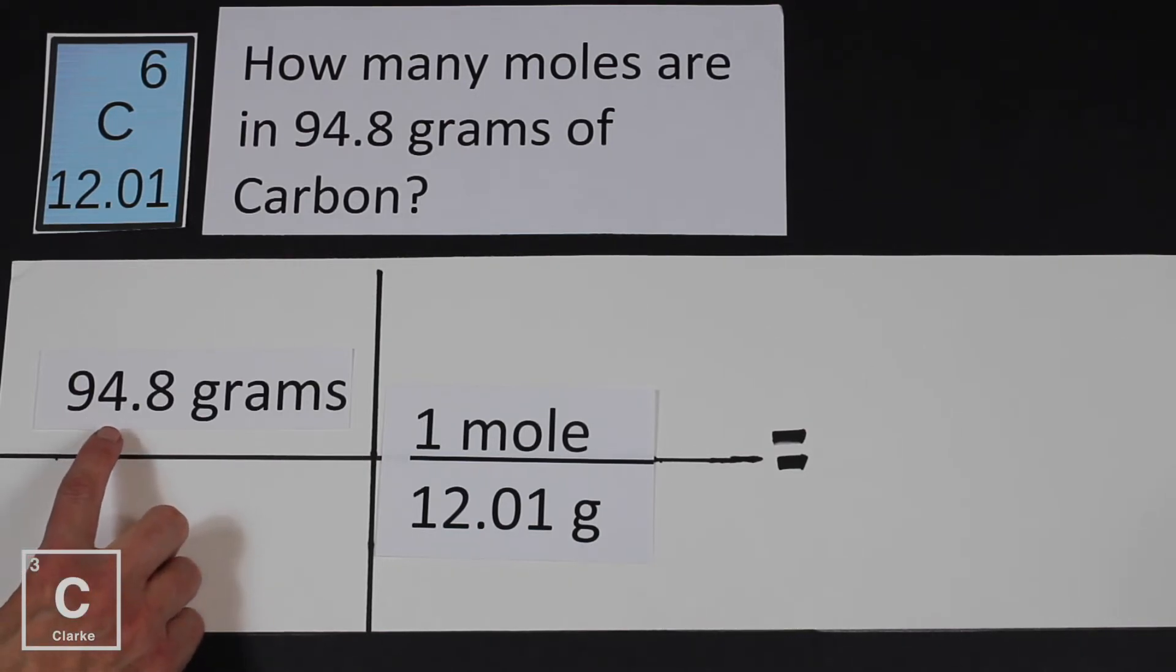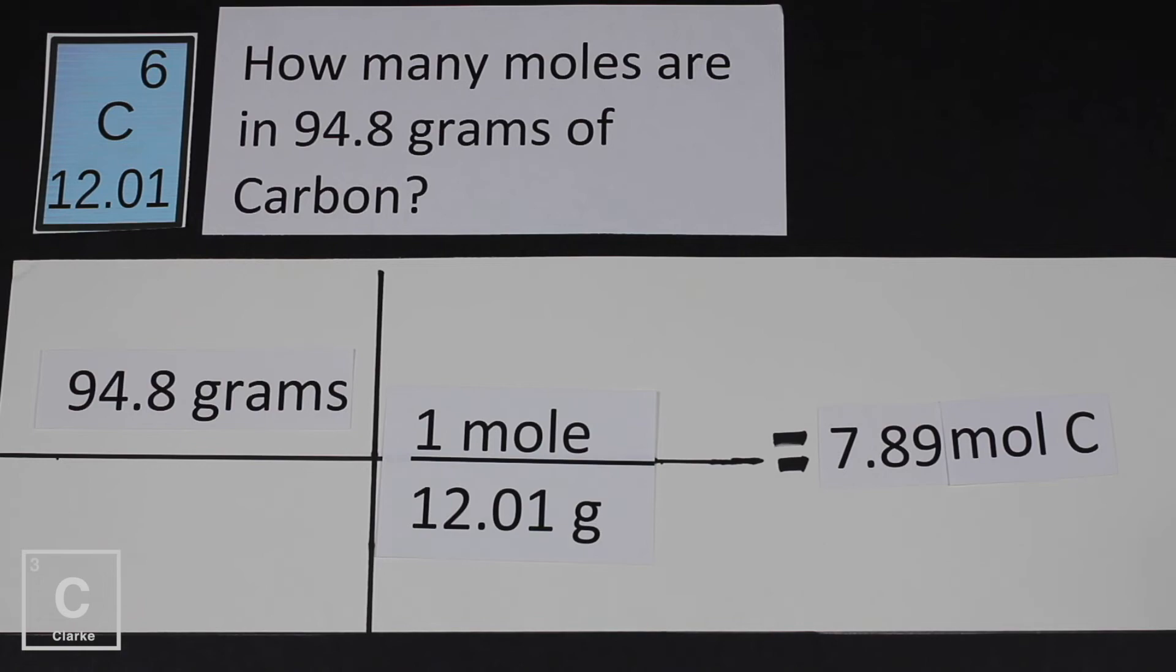94.8, that's on top. 12.01, that is on bottom. That tells us we need to divide. And 94.8 divided by 12.01. Again, we've got three sig figs. One, two, three. So our answer is going to have three sig figs. And so I rounded that to 7.89 moles of carbon.